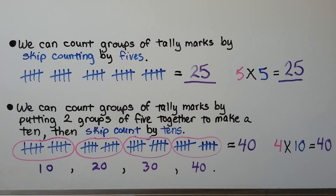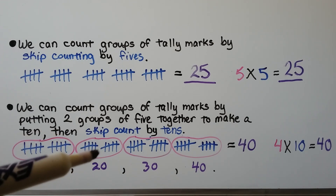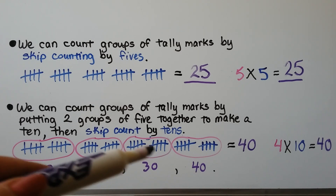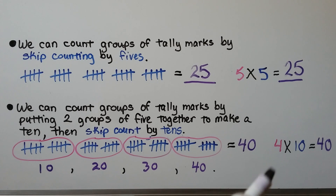We can also count groups of tally marks by putting 2 groups of 5 together to make a 10, then count: 10, 20, 30, 40. We have 4 groups of 10, so 4 times 10 is equal to 40.